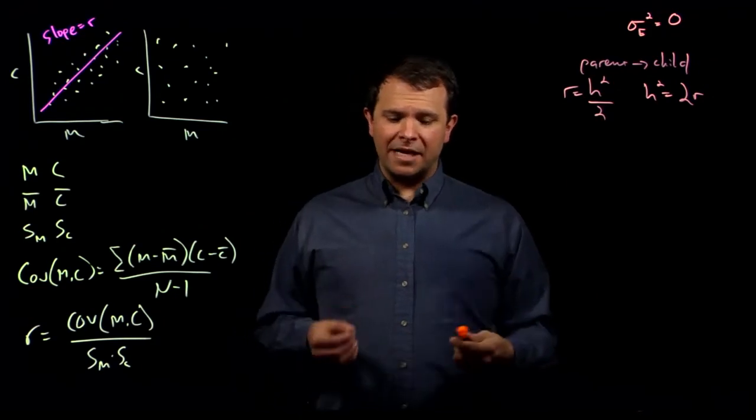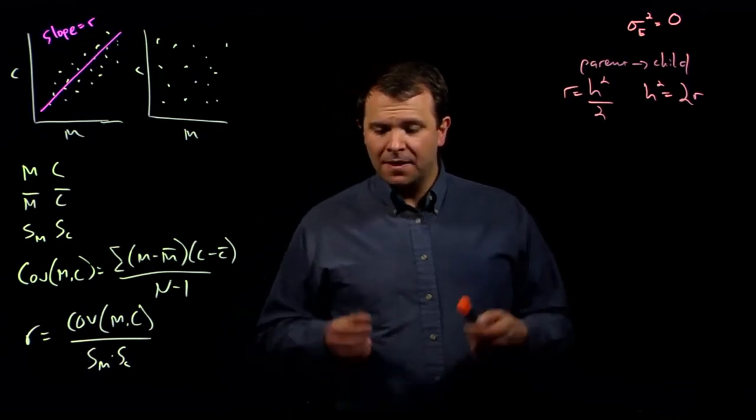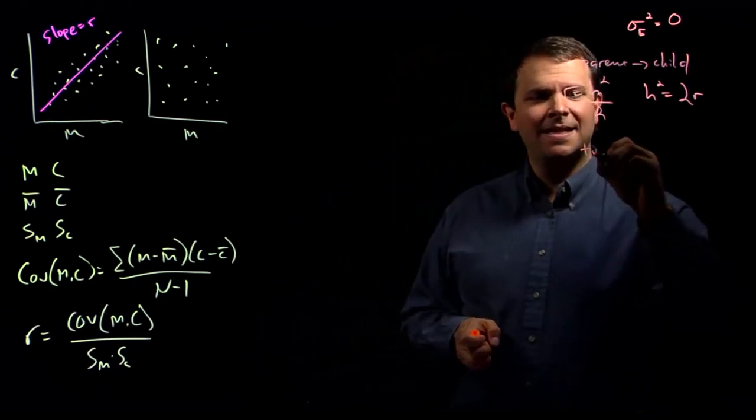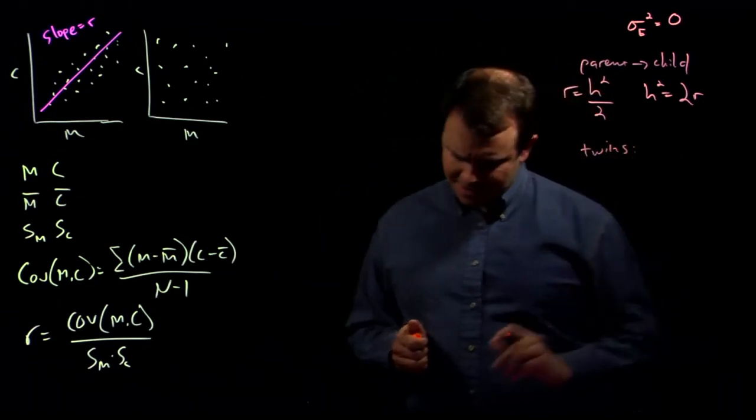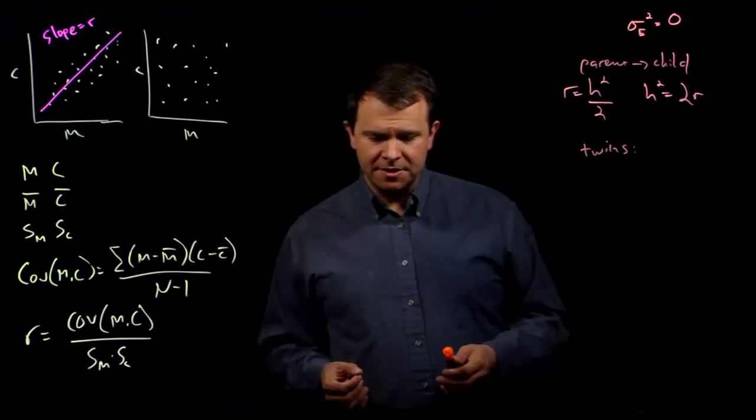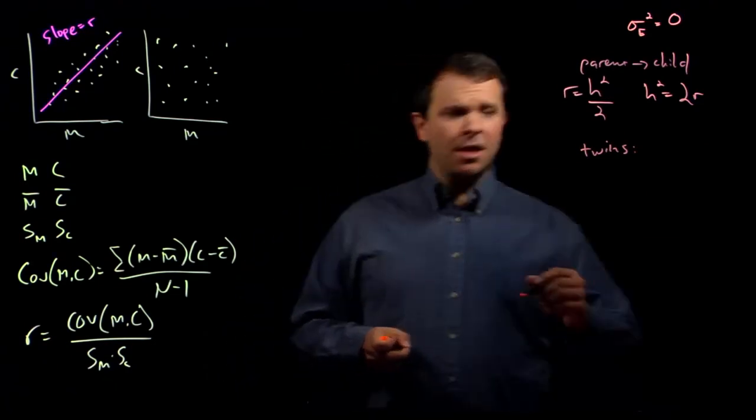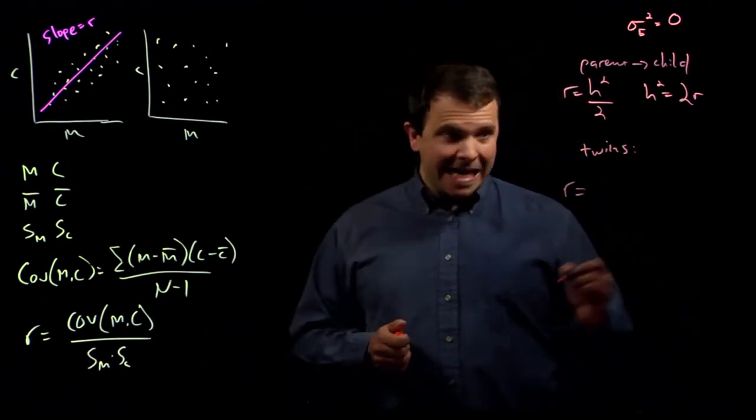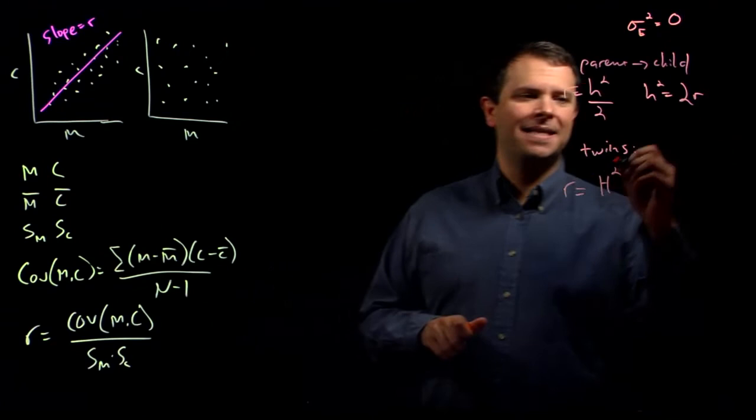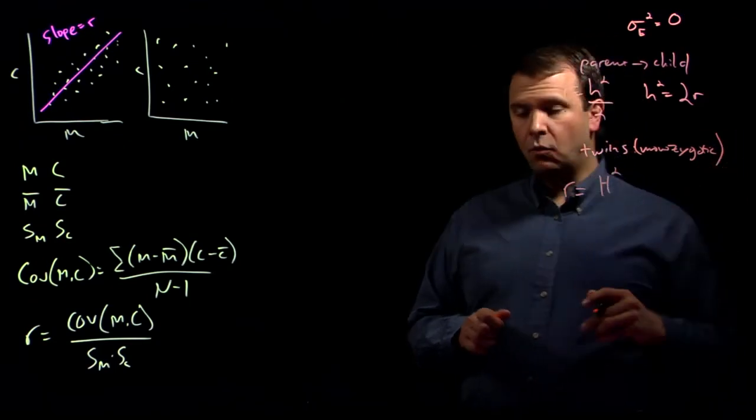And second, when we consider the correlation between full siblings or monozygotic twins, the correlation coefficient R lets us estimate the broad sense heritability. And so, let's consider twins. In monozygotic twins, they share all of the same alleles. But, they share the same dominance and epistasis effects as well. And so, the correlation coefficient is the broad sense heritability of a trait when we're looking at monozygotic twins or identical twins.